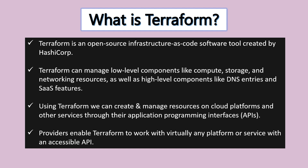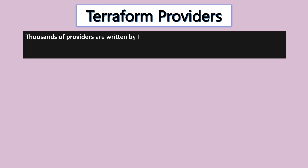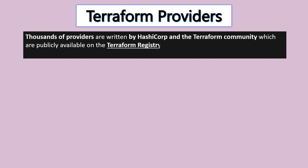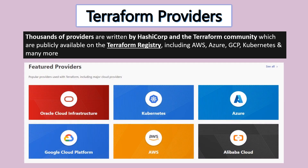Terraform providers use different platforms to communicate — IaaS and other cloud services. The top or popular providers include Azure, AWS, GCP, Oracle Cloud, Kubernetes, and Alibaba Cloud.